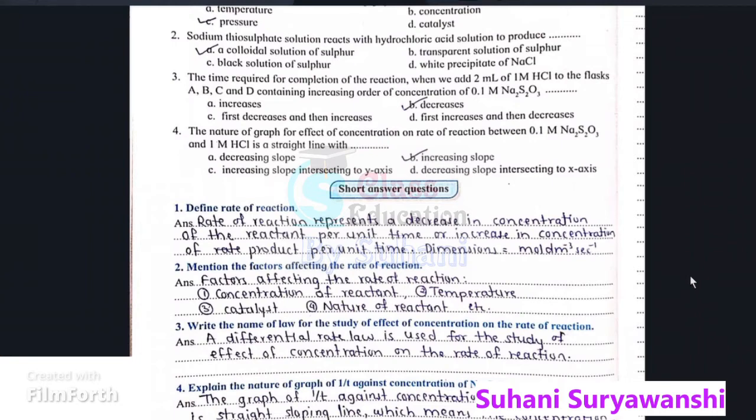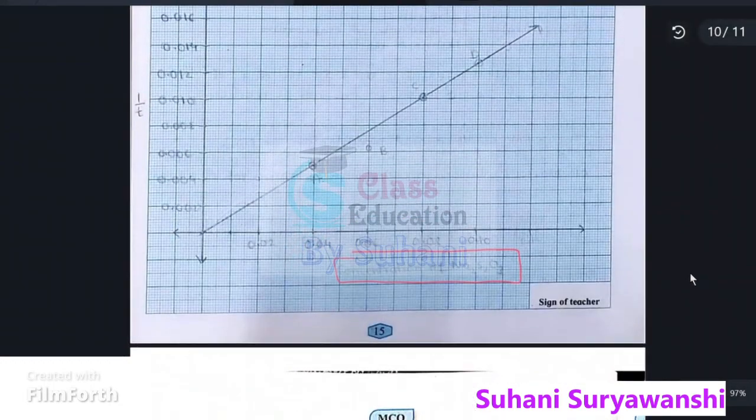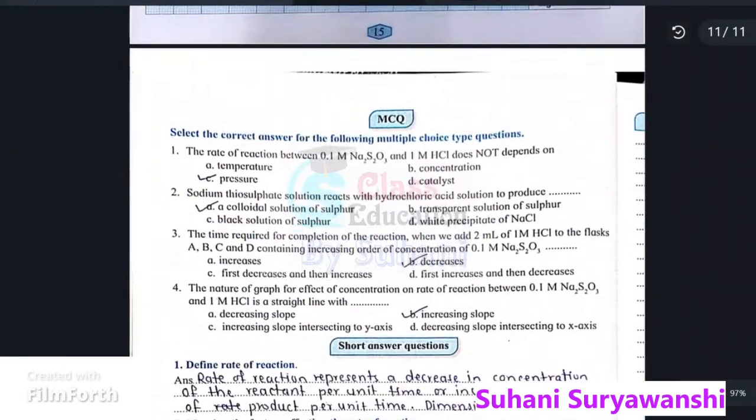The nature of graph for effect of concentration on rate of reaction between 0.1 mol Na2S2O3 and 1 mol HCl is a straight line with increasing slope.